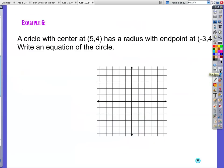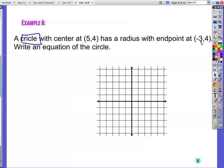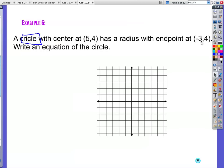All right. Next example. Oh, circle is misspelled. Do not email me. Do not try to get an extra credit point for that. I'm catching it right now. Circle with a center at (5, 4) has a radius with an endpoint at (-3, 4). Write the equation of the circle.